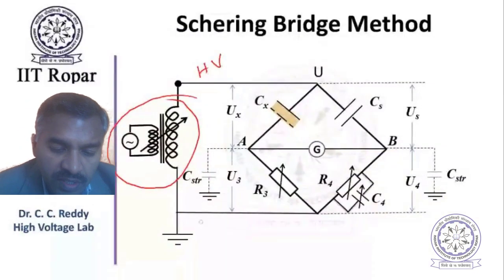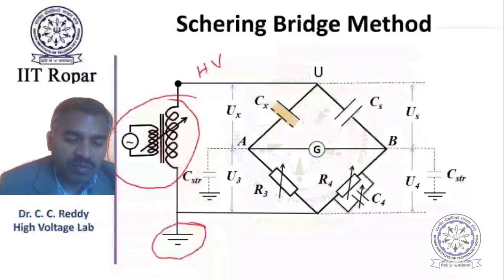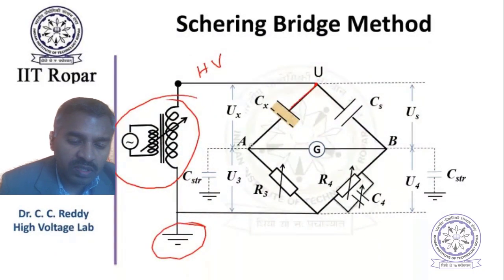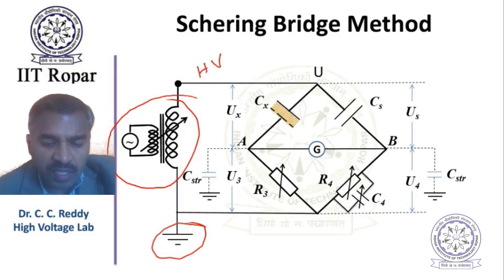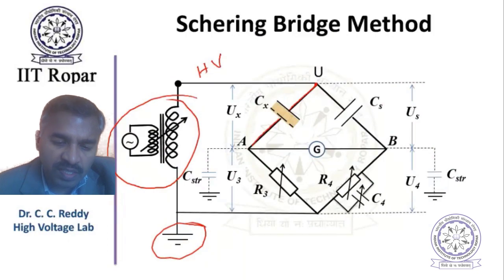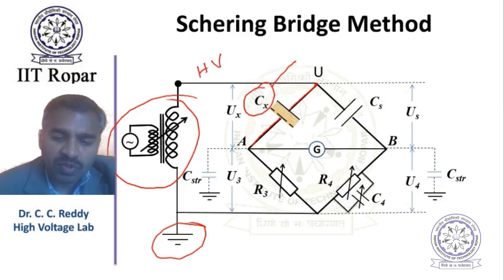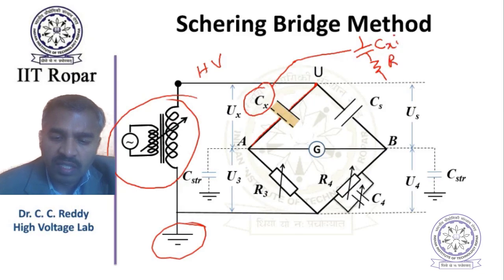This is a basic Schering bridge. There is a transformer supplying high voltage at which measurements are to be done - this is high voltage and this is ground. In one arm, Cx is given, which is the unknown capacitance. You can assume Cx as a lossy capacitor - either a parallel combination or series combination of an ideal capacitor Cx and a resistive portion Rx.